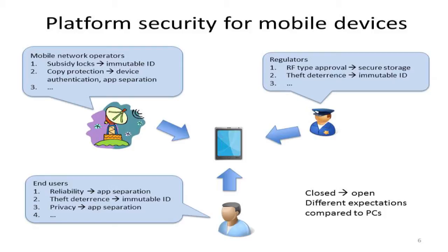The second class of stakeholders are regulators. If mobile operators were motivated by business needs, regulators are motivated by the public good. Before you can sell a mobile device in a jurisdiction — before Nokia, Samsung, or Apple can sell a phone model in Israel — they have to get approval from the local regulatory authority. This process is called type approval: they submit the design, specification, and test results, and if the authority gives type approval they can start selling. In the US, this authority is the FCC.